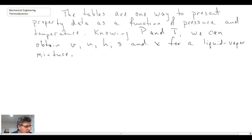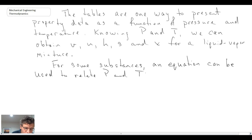For some substances, what we can do is we can relate pressure and temperature to the specific volume itself. The equation that we use for doing this is called an equation of state.